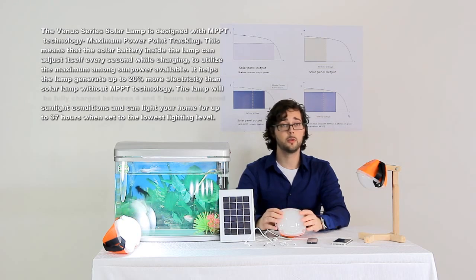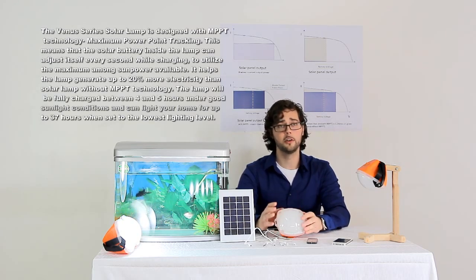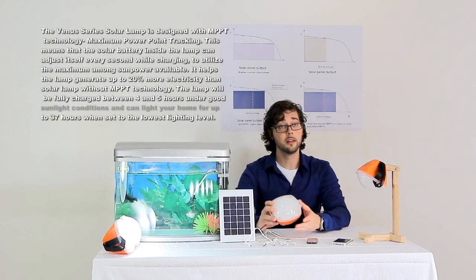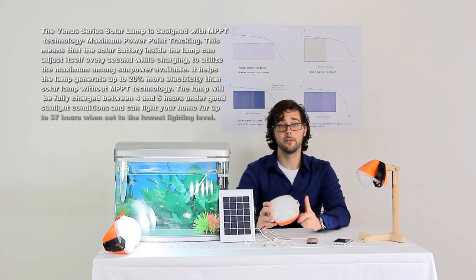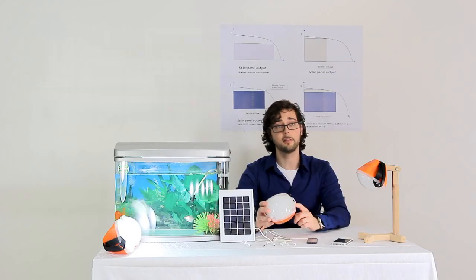It helps the lamp generate up to 20% more electricity than a solar lamp without MPPT technology. The lamp will be fully charged between four and five hours under good sunlight conditions, and can light your home for up to 37 hours when set to the lowest lighting level.